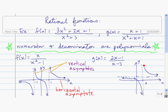Let's take a look at this function. We see here that we have a vertical asymptote because the function is getting closer to it. So this is a vertical asymptote. We also have a horizontal asymptote here because the function is getting closer and closer to that horizontal line at y equals 2.